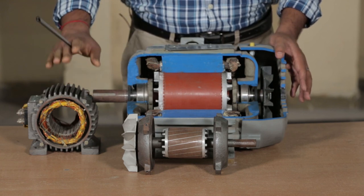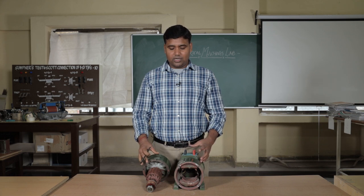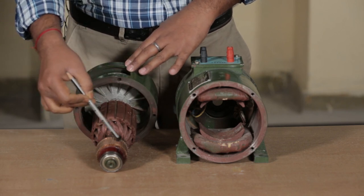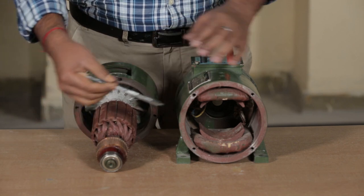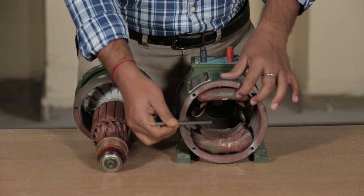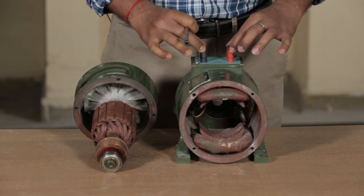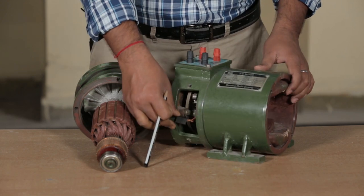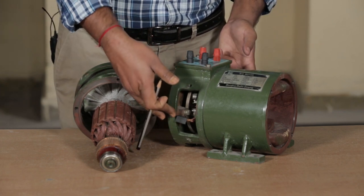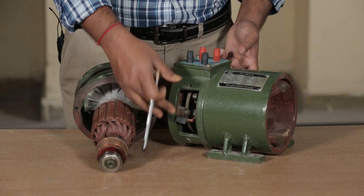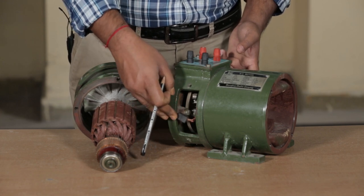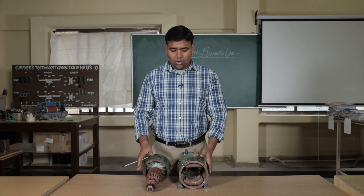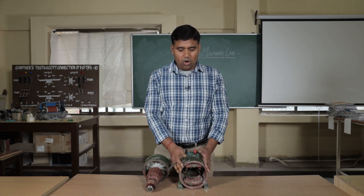Let us see the cutout section of a DC motor. In the DC motor, we have an armature, a commutator, bearings, and field poles — two field poles are there. Terminals come out: this is the armature terminal and this is the field terminal. We can see there are carbon brushes; two brushes are attached to the armature. There will be a voltage loss of two volts per brush drop. This is the yoke of the machine.